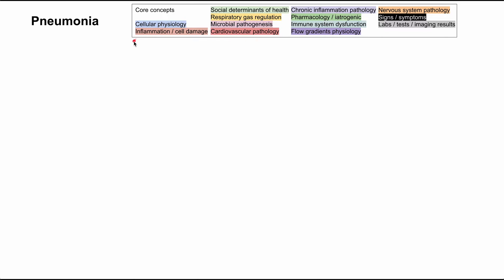This is a mechanism of disease map for pneumonia. We're going to be talking about how pneumonia is caused, the pathogenesis, the mechanism of disease, as well as some of the signs, symptoms, and other lab manifestations of pneumonia, pleural effusion, and associated conditions. Here's a key of everything we're going to be talking about — boxes color-coded according to the legend. We'll cover risk factors, work through the pathophysiology, the disease process, and then end with the manifestations of the disease.